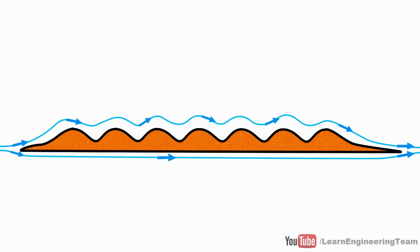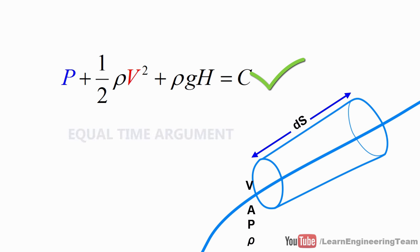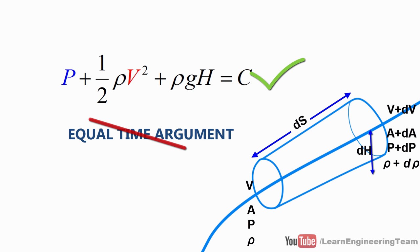Bernoulli's equation is completely right. It is just Newton's second law of motion applied along a fluid streamline. Some people applied it incorrectly and caused confusion. Now, we will investigate the science behind lift generation by applying the laws of physics correctly.